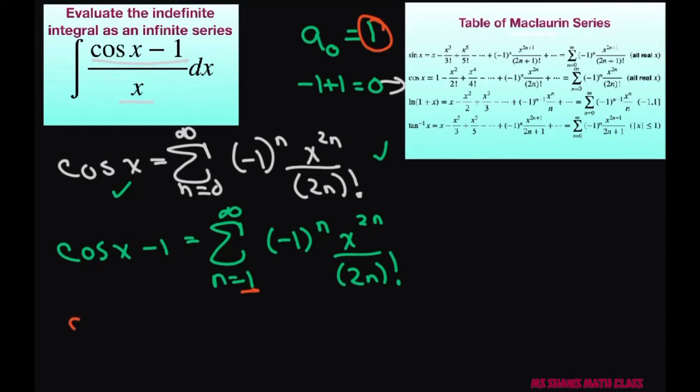Now we have to do cosine of x minus 1 divided by x. Well that just means we're multiplying through by x so this is going to be the sum from n equals 1 to infinity negative 1 to the nth power and then we have 2n factorial times x and this is x to the power of 2n.